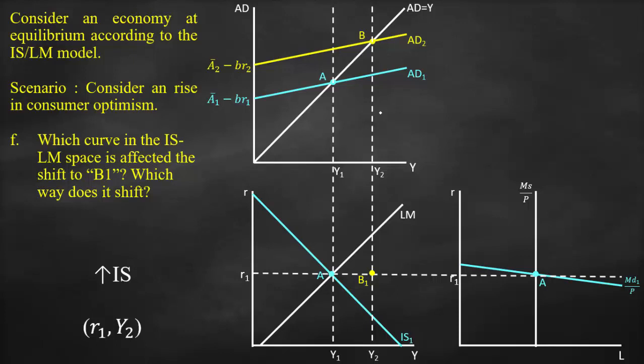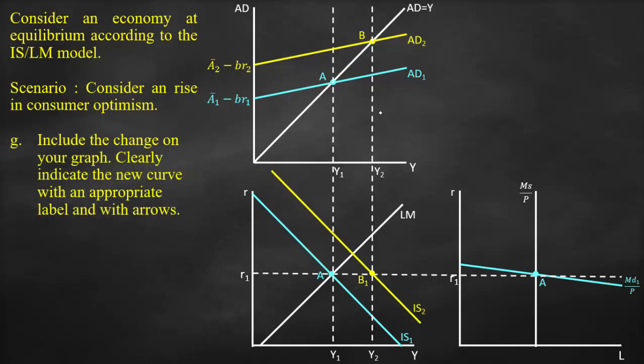The IS curve shifts to the right crossing point B1, meaning IS now crosses at R1 and Y2.